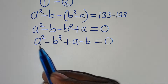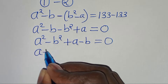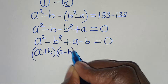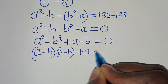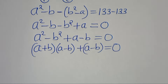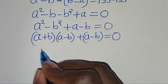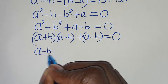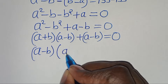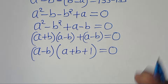Now, a squared minus b squared is the difference of two perfect squares, which we can express as a plus b, multiplied by a minus b, then plus a minus b, and this equals 0. So we can factor out a minus b, giving a minus b, times the quantity a plus b plus 1, equals 0.